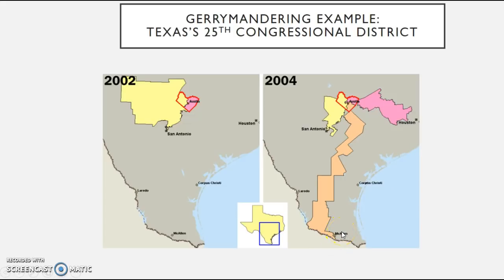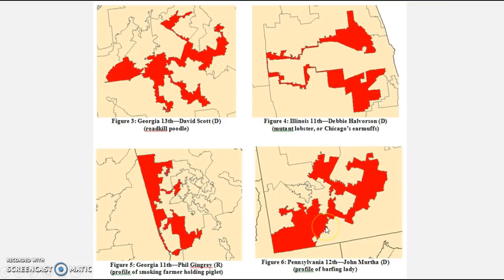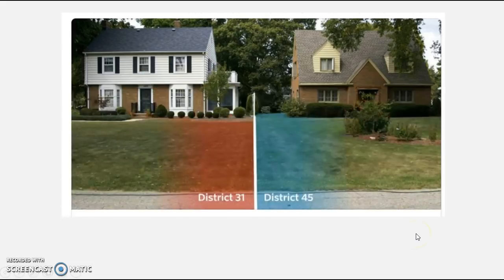Here are some other oddly shaped districts with interesting names: the Roadkill Poodle, the Earmuffs if you tilt your head sideways, Profile of Smoking Farmer Holding a Piglet — you have to really look for that one — and then a Profile of a Barfing Lady, which you also have to look for.